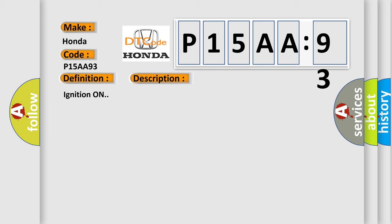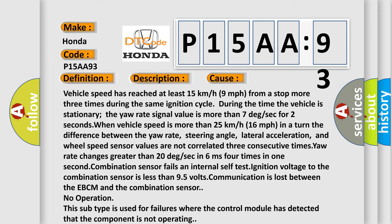This diagnostic error occurs most often in these cases. Vehicle speed has reached at least 15 kilometers or 9 miles per hour from a stop more than three times during the same ignition cycle. During the time the vehicle is stationary, yaw rate signal value is more than 7 degrees per second for two seconds when vehicle speed is more than 25 kilometers or 16 miles per hour.